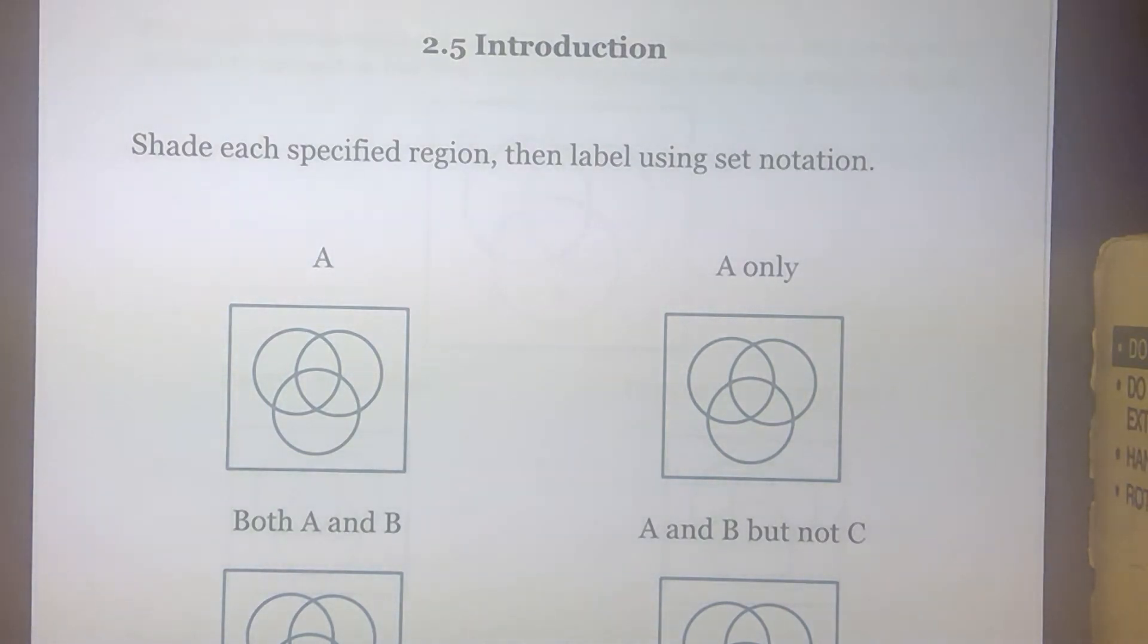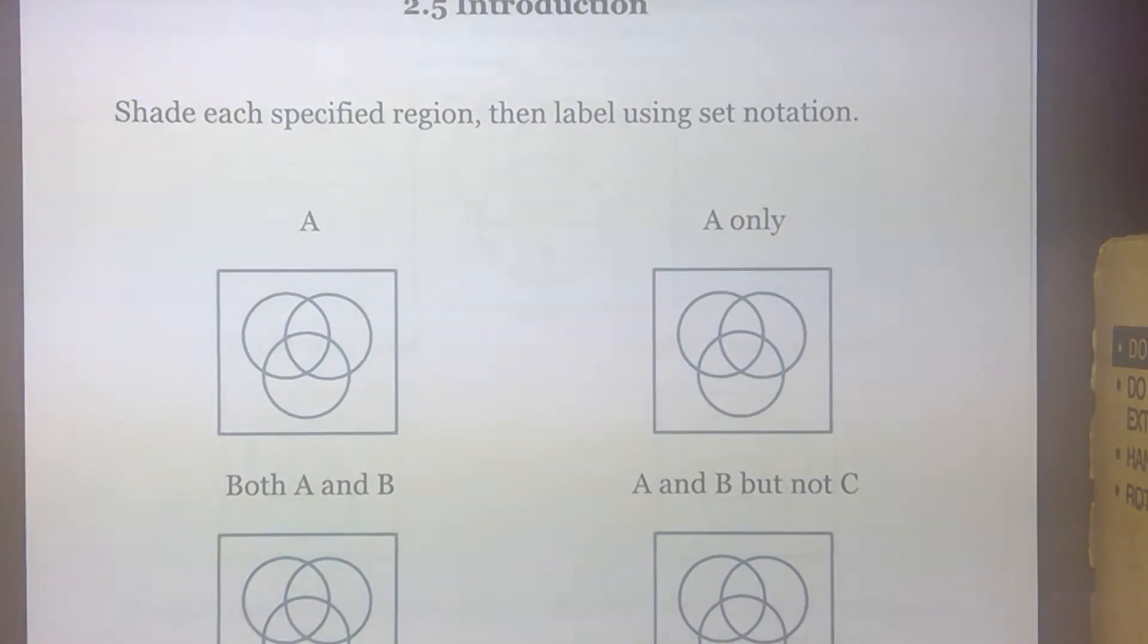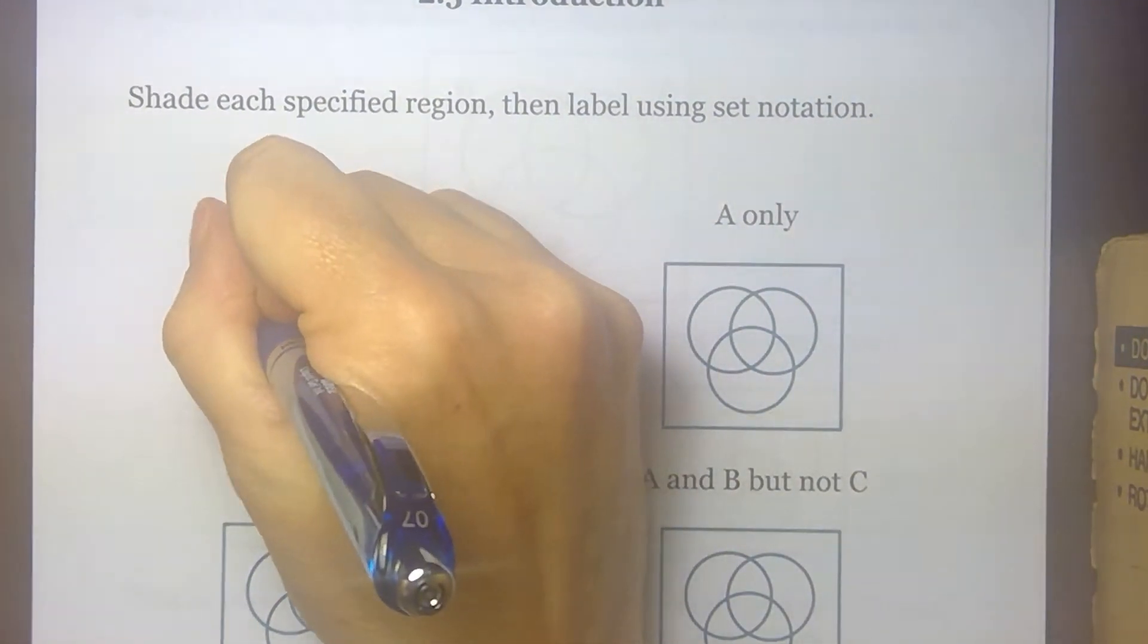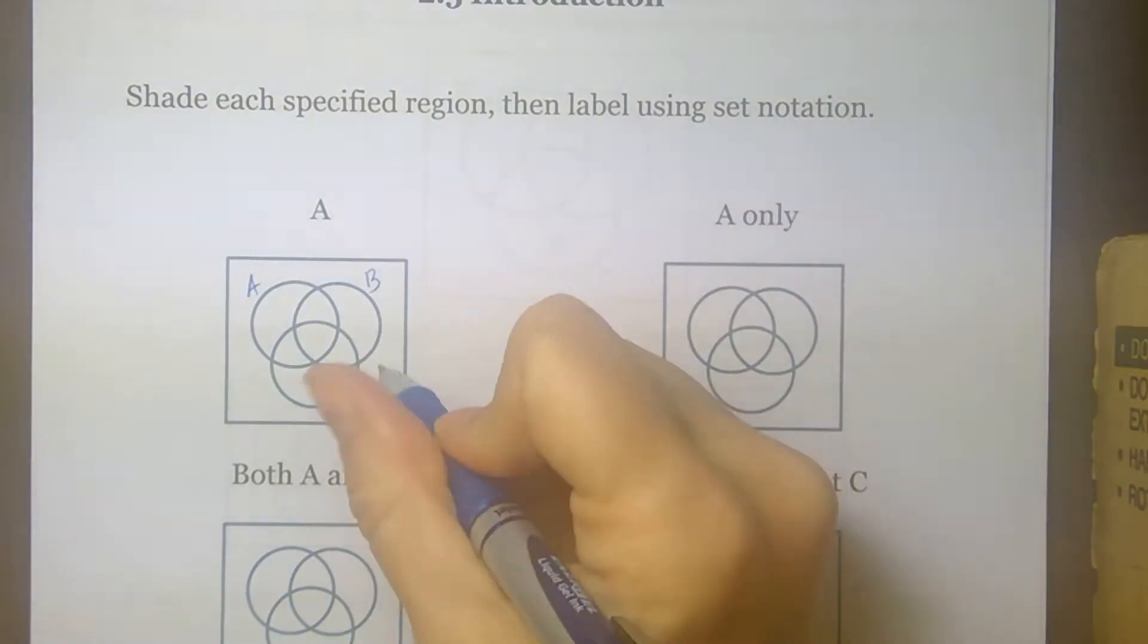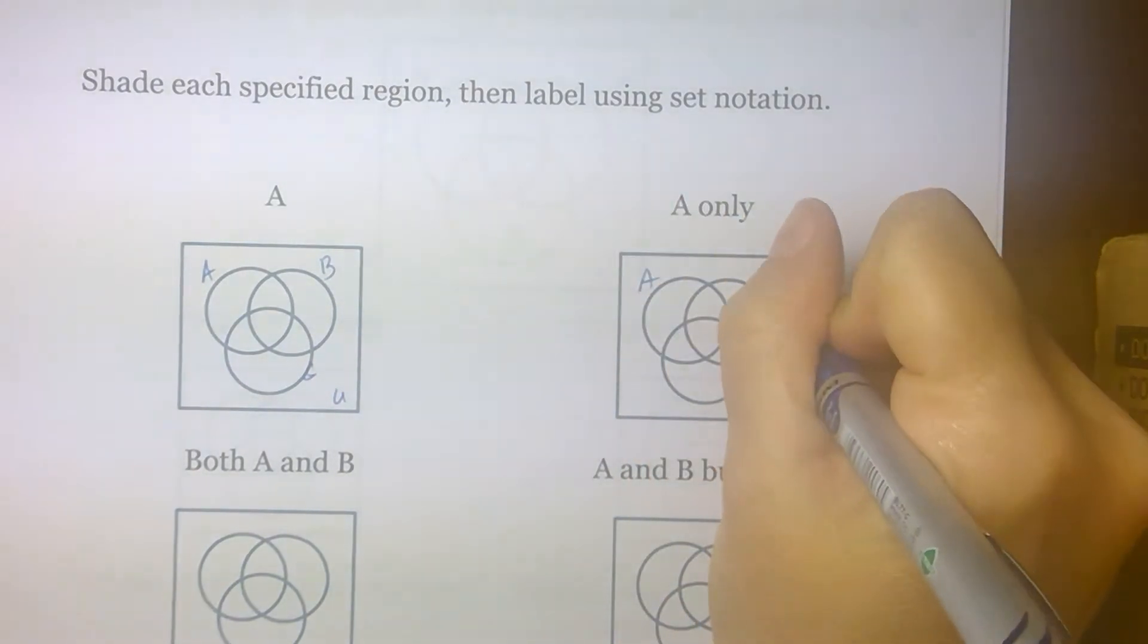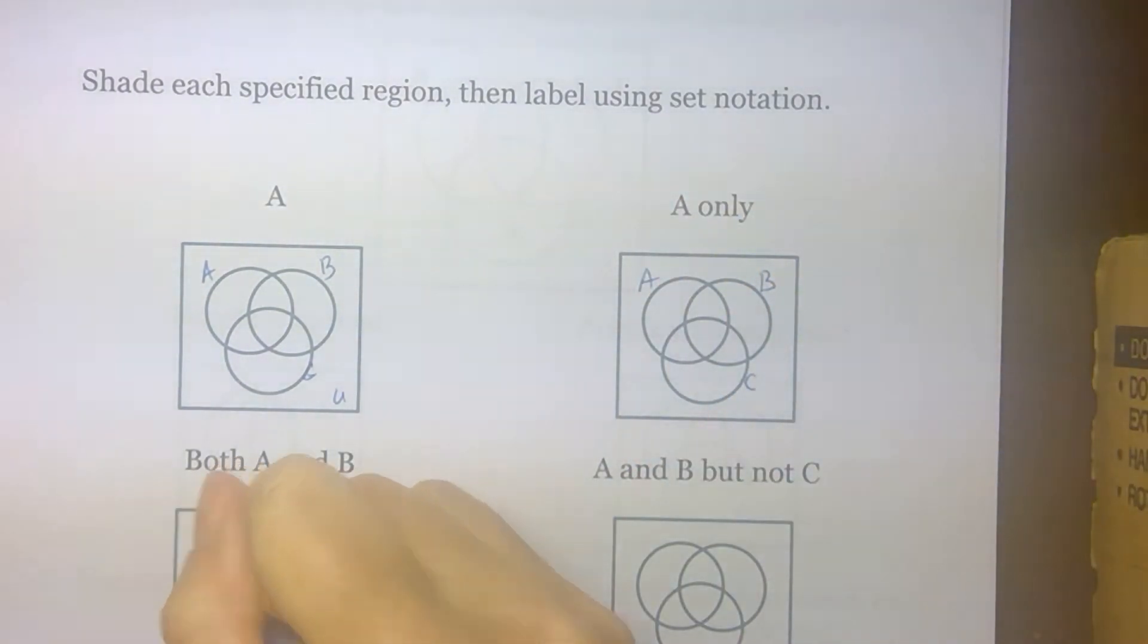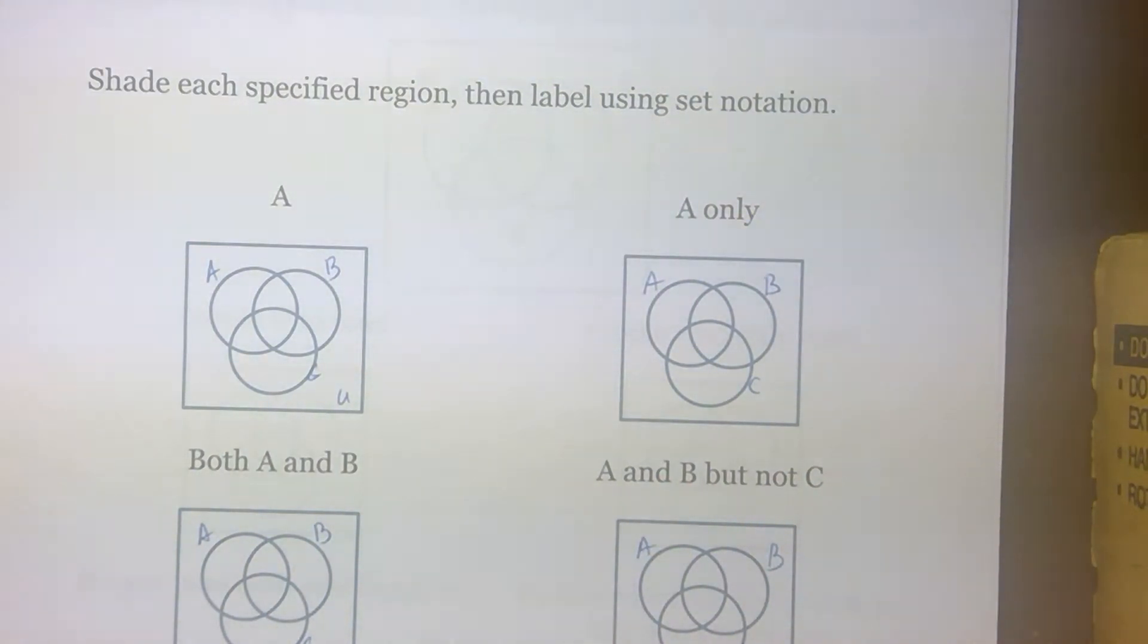As we move into Chapter 2, Section 5, we are still working with 3-loop Venn diagrams and we're going to do some more shading. Like with the last set of diagrams we shaded, we want to think about labeling them ABC, and remember that the box represents that universal set. So if we do ABC for each of these 3-loop diagrams, then we'll be ready to go.